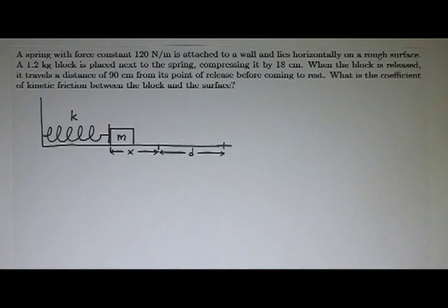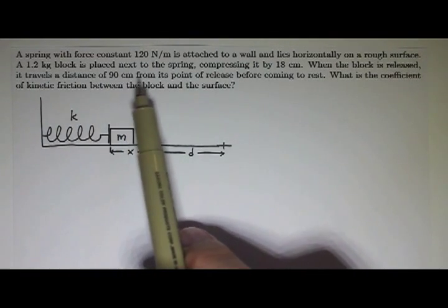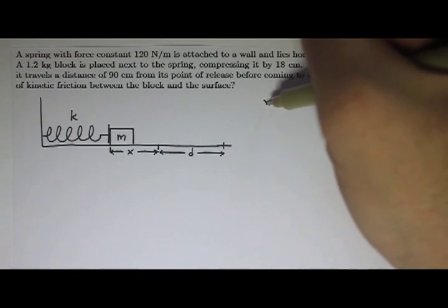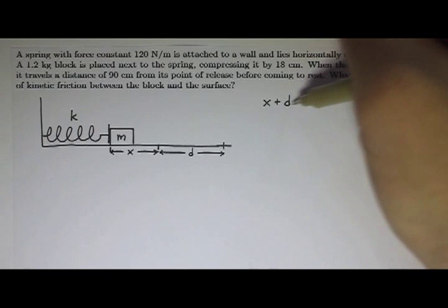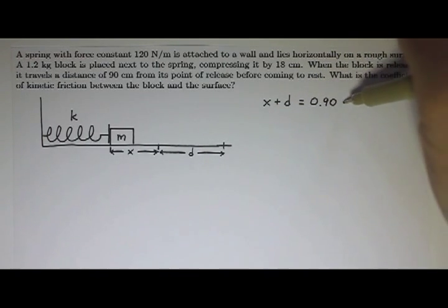So it says when the block is released, it travels a distance of 90 centimeters from its point of release. So that 90 centimeters is actually x plus d. So maybe we'll write that right now: x plus d is 90 centimeters, which is 0.90 meters.